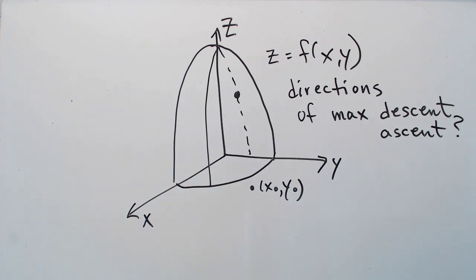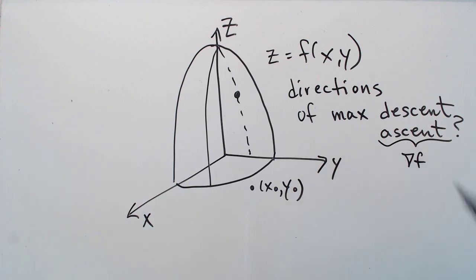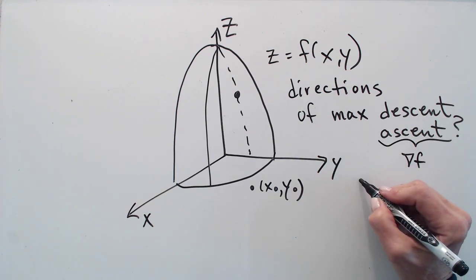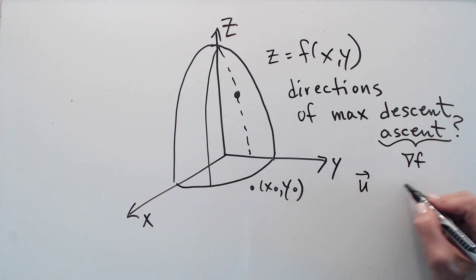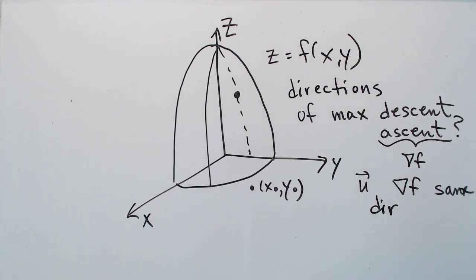Said another way, what are the directions of maximum descent and ascent? Well, we know that the direction of maximum ascent is going to be in the direction of the gradient. In other words, when u and the gradient are in the same direction. The direction of maximum descent is in the direction of minus the gradient. But let's see what that looks like in this picture.